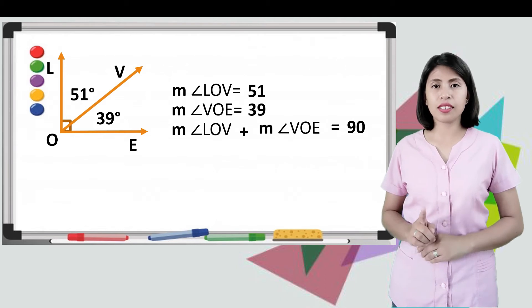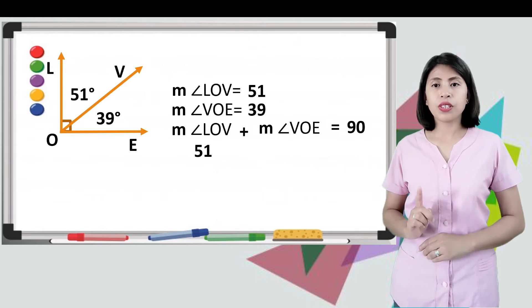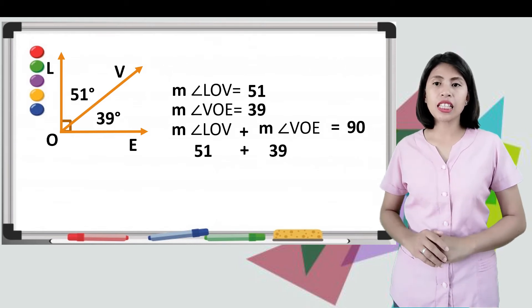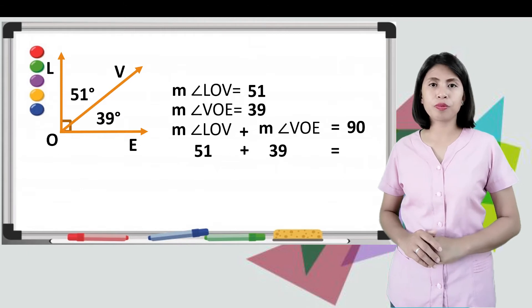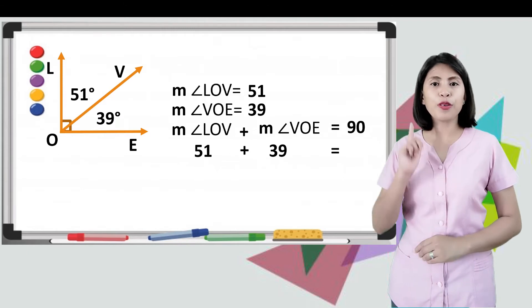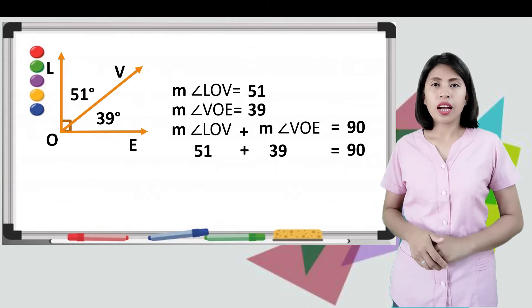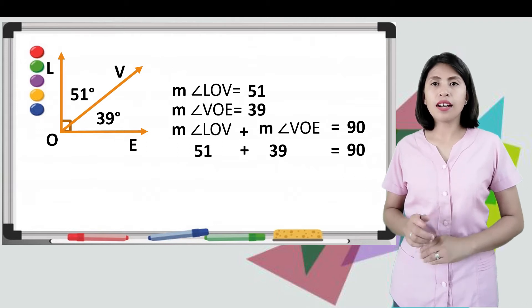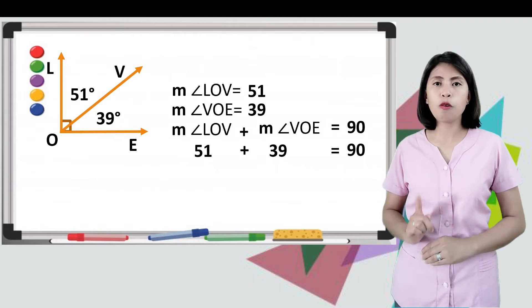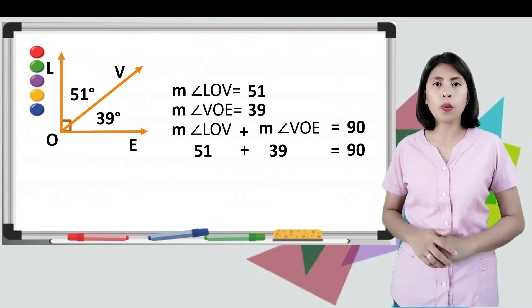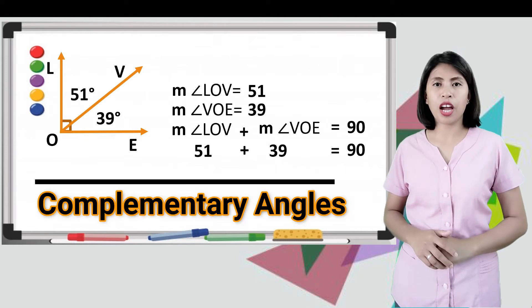So let's check: 51 plus 39 is equal to 90. Therefore, angle LOV and angle VOE are complementary angles.